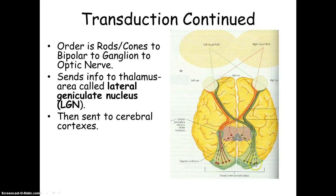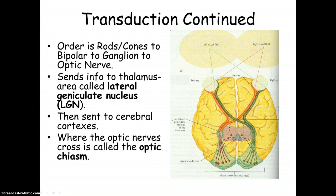And then it's sent to the cerebral cortexes. Remember, that's the occipital lobe. And that place where the optic nerves cross is called the optic chiasm.